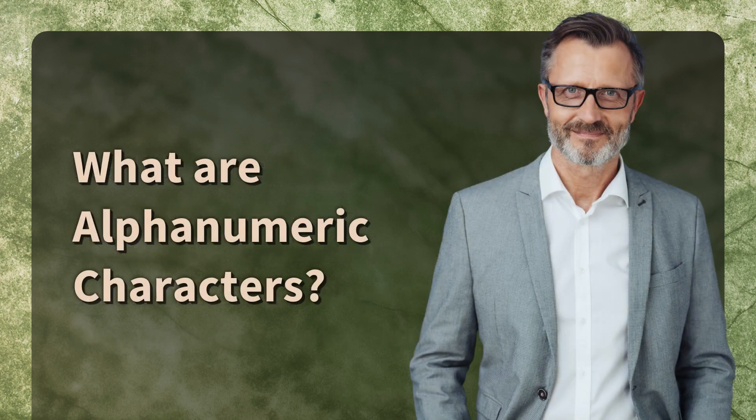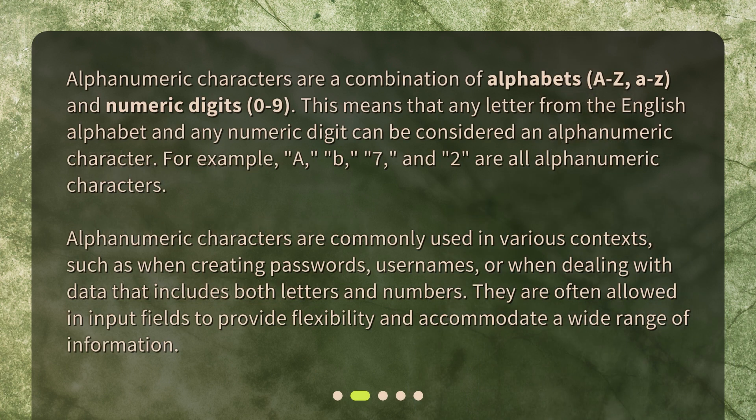What are alphanumeric characters? Alphanumeric characters are a combination of alphabets, A to Z, and numeric digits, 0–9. This means that any letter from the English alphabet and any numeric digit can be considered an alphanumeric character. For example, A, B, 7, and 2 are all alphanumeric characters.